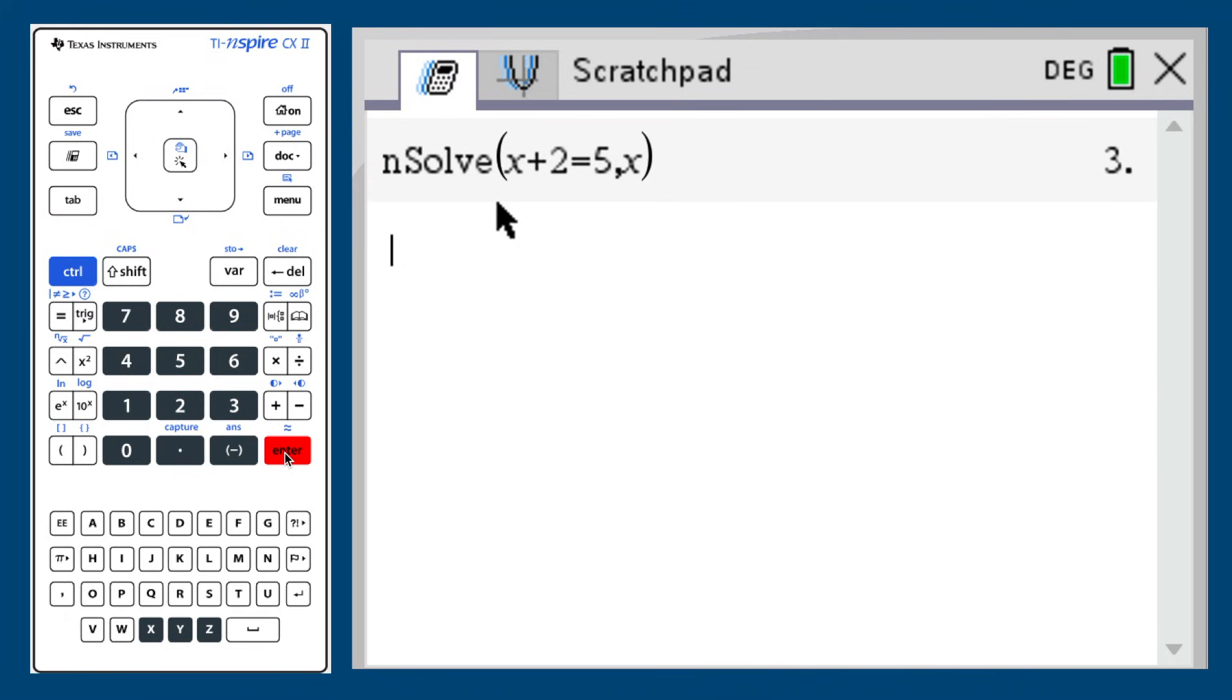This function can be used for more advanced equations as well. For example, the polynomial c squared minus 6c plus 8 equals 0.